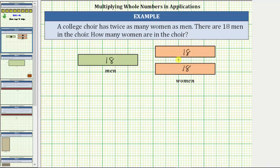The number of women in the choir is equal to two groups of 18, or two copies of 18, which can be written as two times 18, or the product of two and 18. Two times 18 is equal to 36. There are 36 women in the choir.